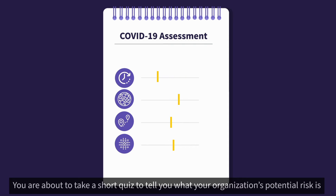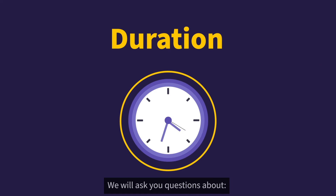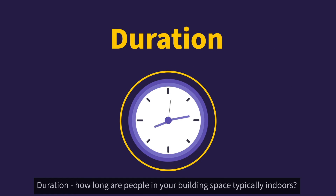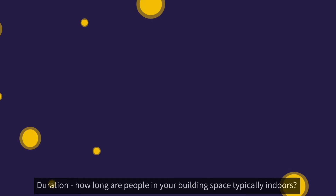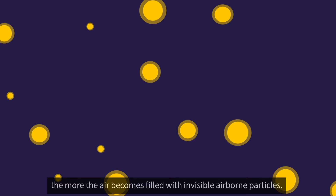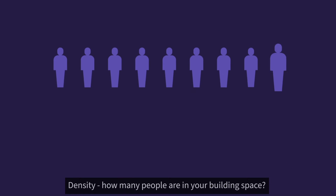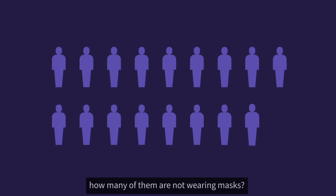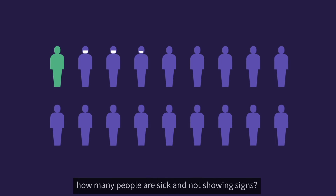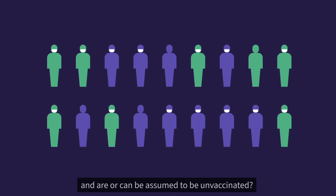You are about to take a short quiz to tell you what your organization's potential risk is and what you can do in your workplace to help address it. We will ask you questions about Duration — how long are people in your building space typically indoors? The longer time spent indoors, the more the air becomes filled with invisible airborne particles. Density — how many people are in your building space, how many of them are not wearing masks, how many people are sick and not showing signs, and are or can be assumed to be unvaccinated.